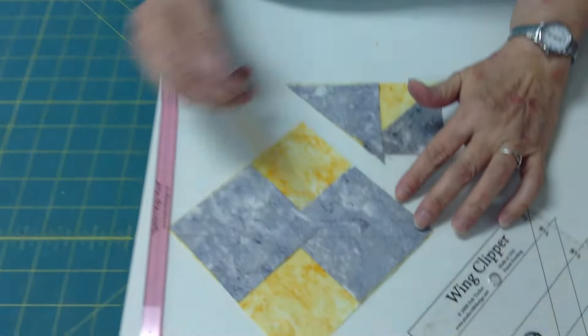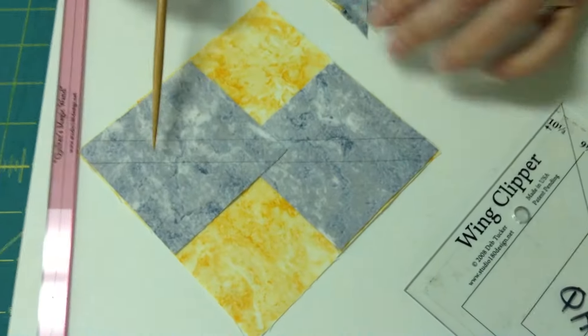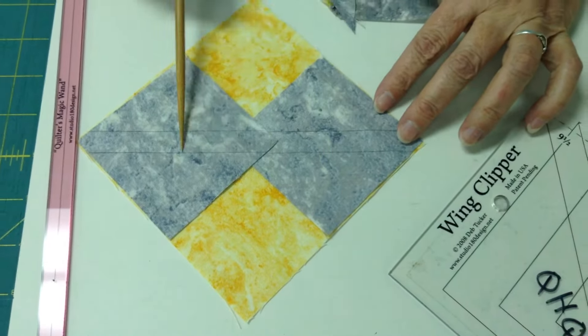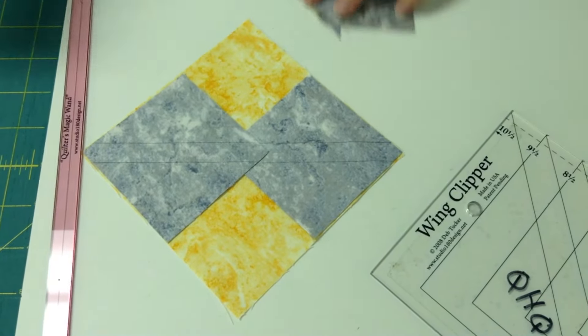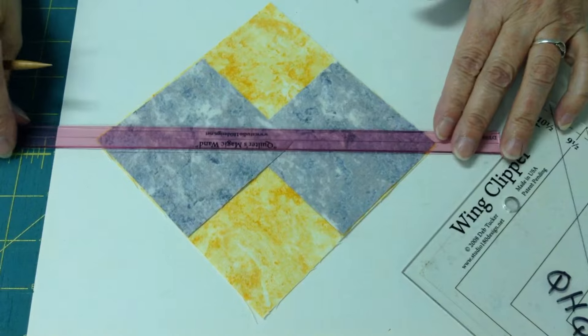So normally, we always put our two corner pieces corner to corner and we draw our lines, right? Just like so.